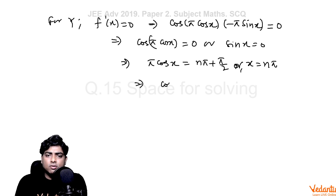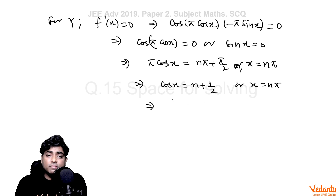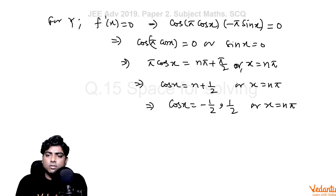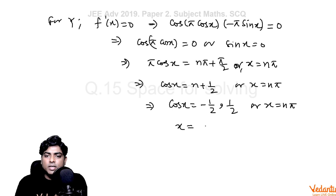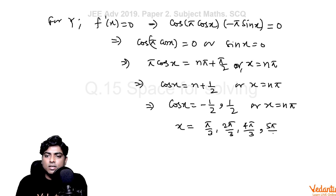From the first condition, cos x = n + 1/2, which means cos x is an integer plus a half — so it can be -1/2 or +1/2. From the second condition, x = nπ. For cos x = ±1/2, x can be π/3, 2π/3, 4π/3, 5π/3, and so on. From x = nπ we get π, 2π, etc.